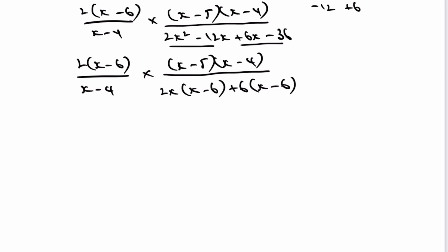So therefore, I've now got a common term, which allows me then to rewrite everything as x minus 5 multiplied by x minus 4 on the top. And on the bottom here, I've got x minus 6, which is common to both, and that's going to be multiplied by 2x plus 6.